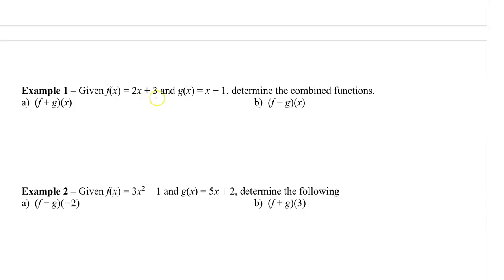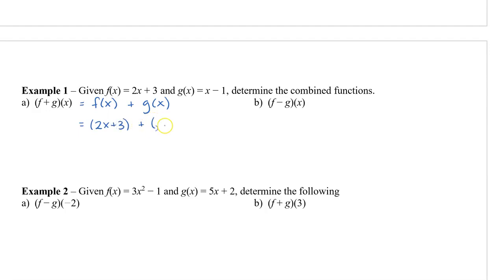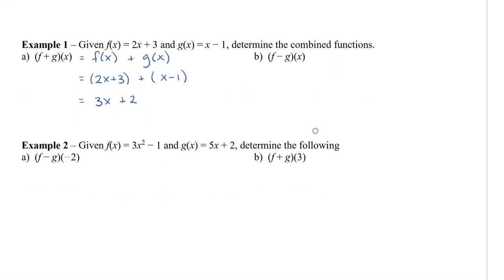Given f of x equals 2x plus 3 and g of x equals x minus 1, determine the combined functions. (f + g)(x) is simply f of x plus g of x. So we take 2x plus 3 and add it together with x minus 1, giving us 3x plus 2.